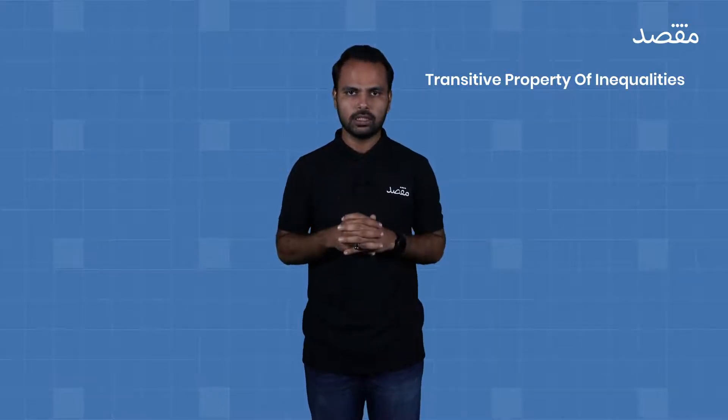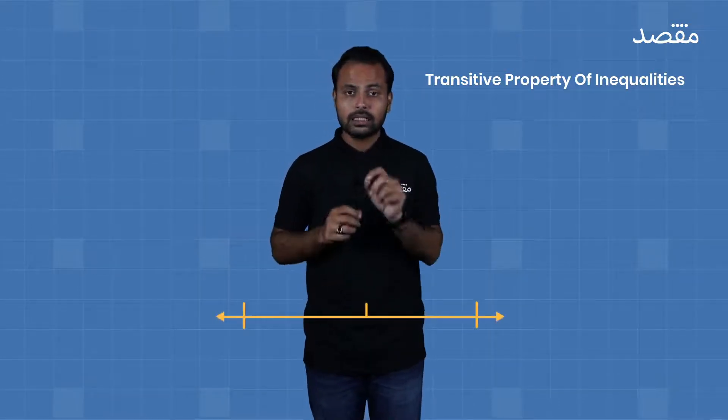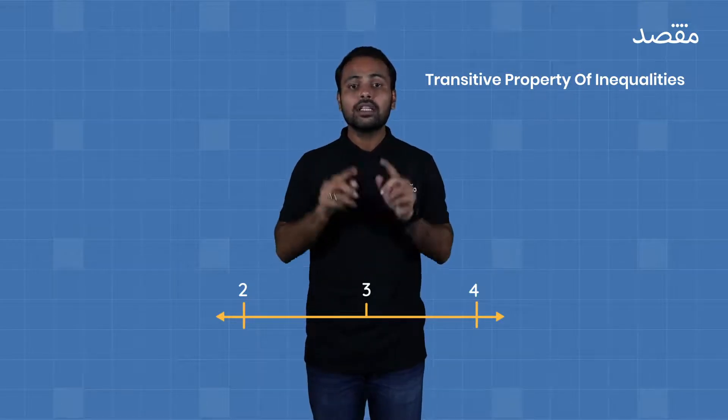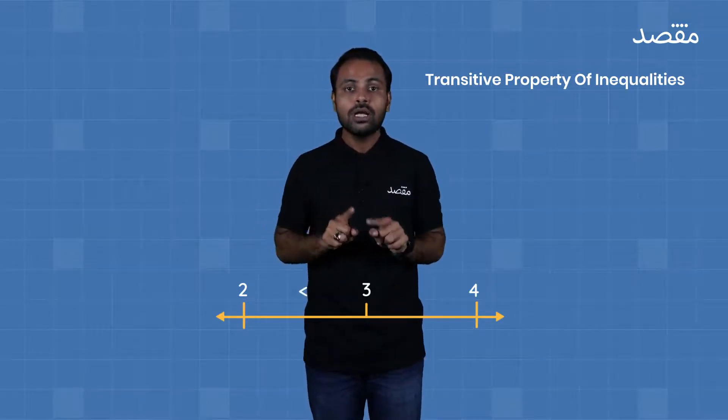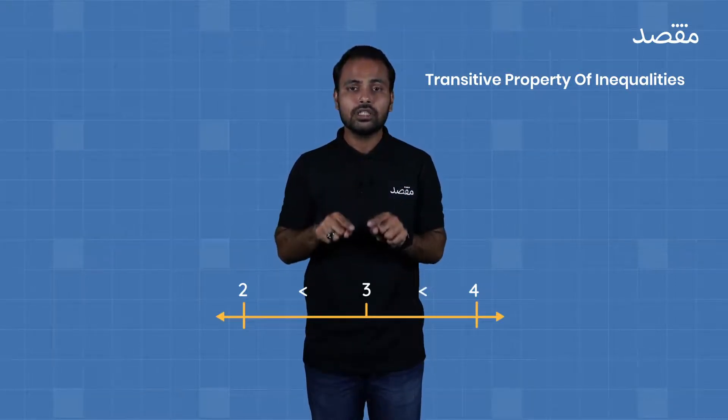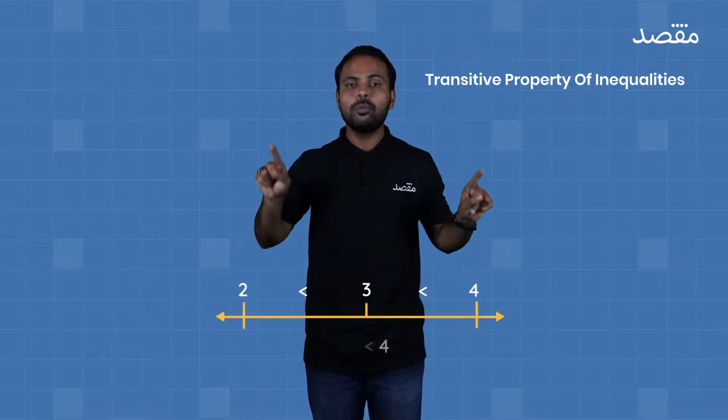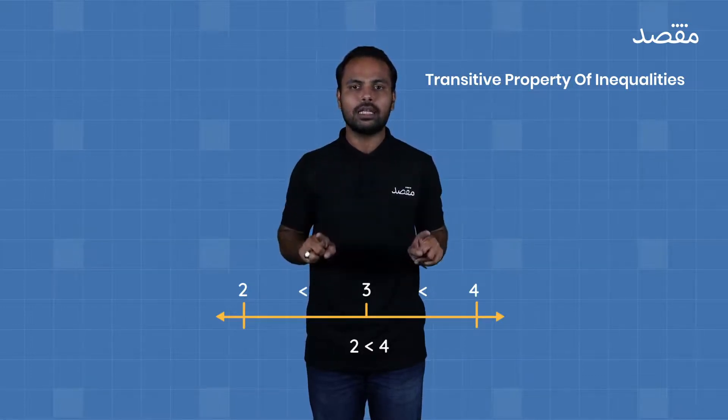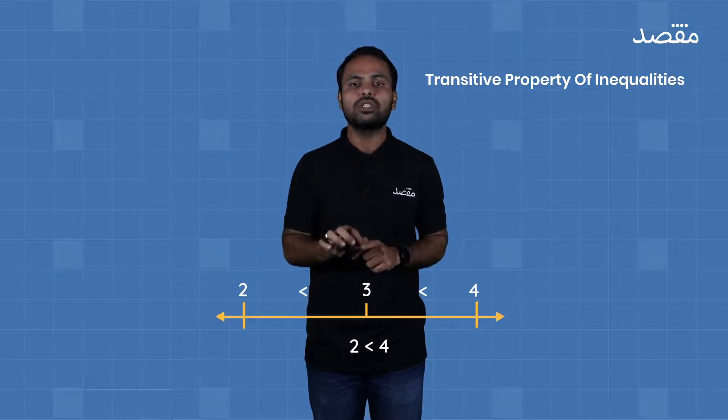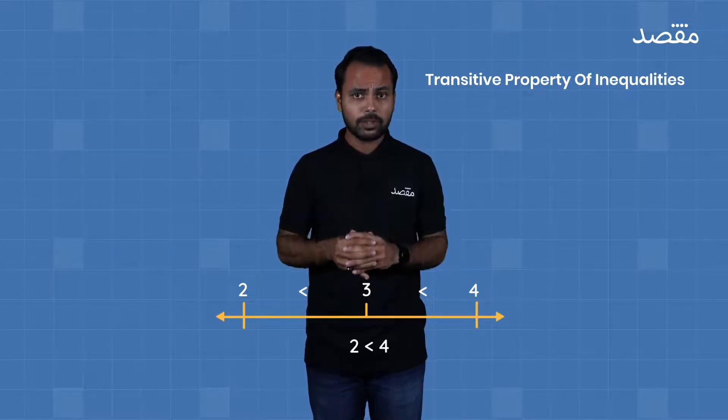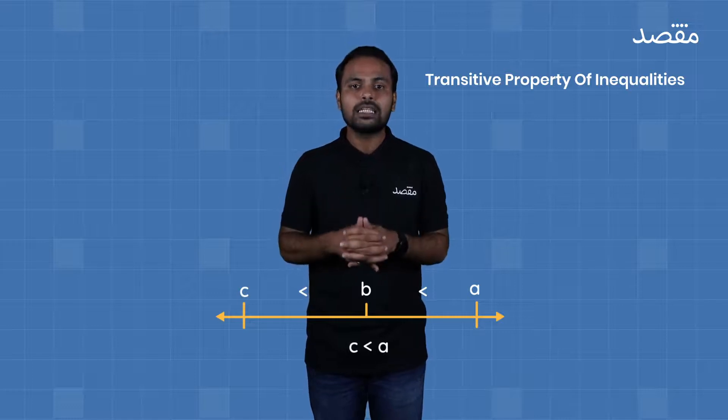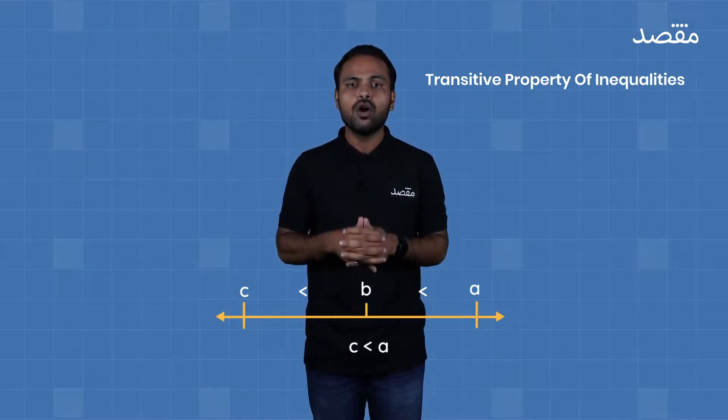You might remember the transitive property of equality: basically when a is equal to b and b is equal to c, we can say that a is equal to c. Now this same thing can be established for inequalities. Let's take a number line. On this number line we have three numbers: two, three, and four. Now we know that three is greater than two and we also know that four is greater than three. Basically, from this relation we can evaluate that four will be greater than two. The idea is that if we are establishing this relation of four greater than two, we don't need the value of three. So the transitive property basically says if a is greater than b and b is greater than c, then a will automatically be greater than c, and this holds true for all real values.